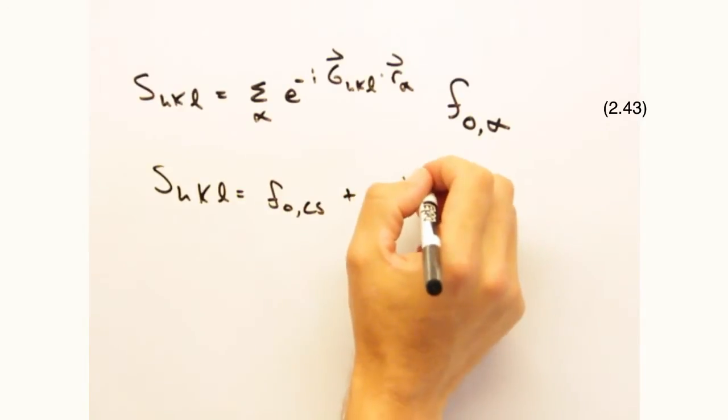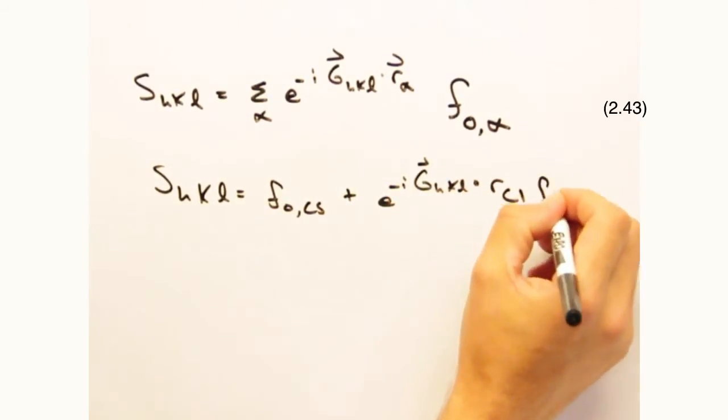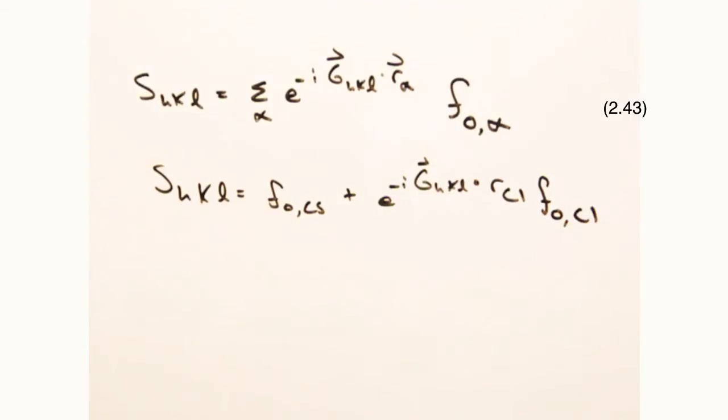This time we have cesium atoms at r equals zero, zero, zero, and a chlorine atom at r equals half, half, half. Like the simple cubic case, the cesium atom would result in a structure factor of f0 cesium for all hkl.